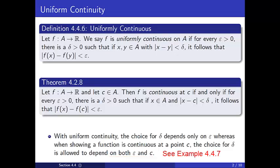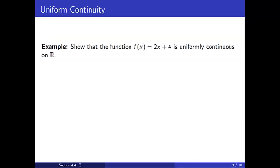This is illustrated in example 4.4.7 for the function f(x) = x² on the domain R. For our first example, we will show that the function f(x) = 2x + 4 is uniformly continuous on the real number line.